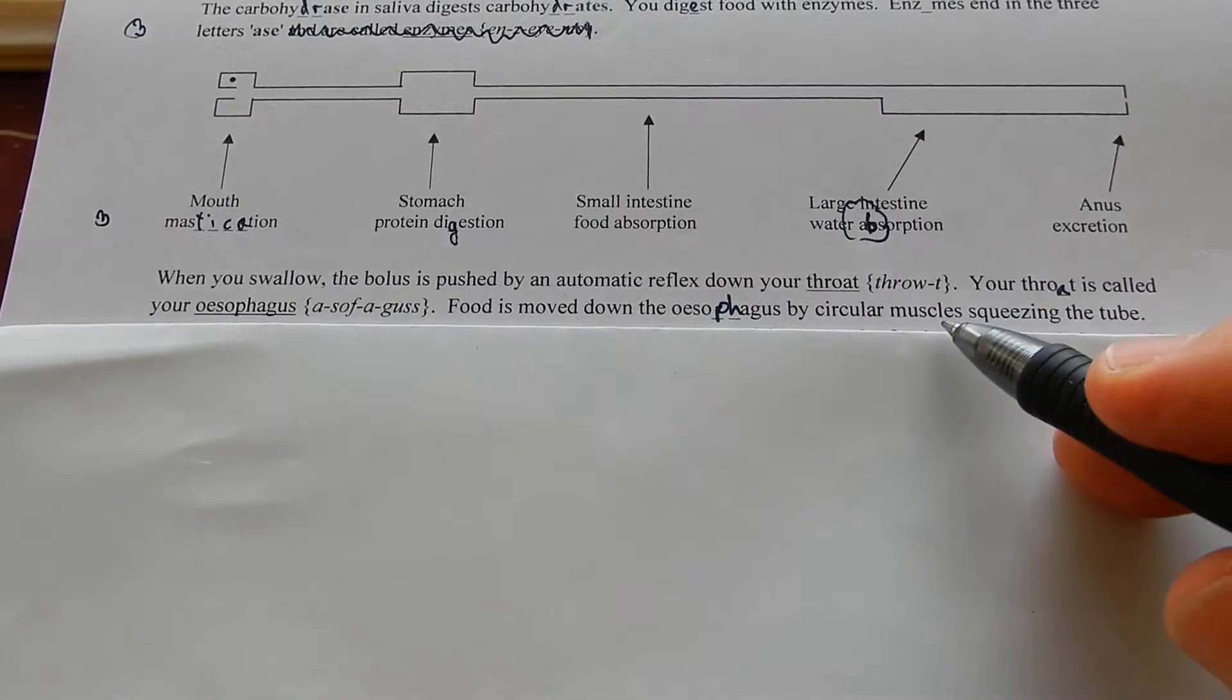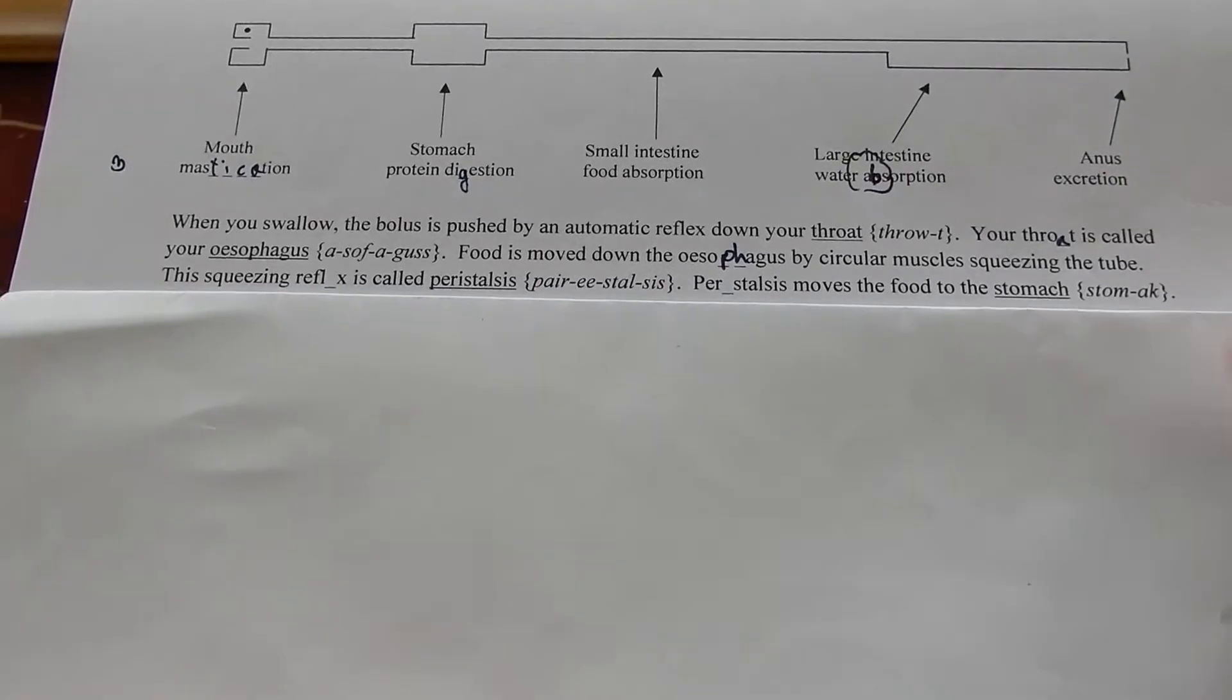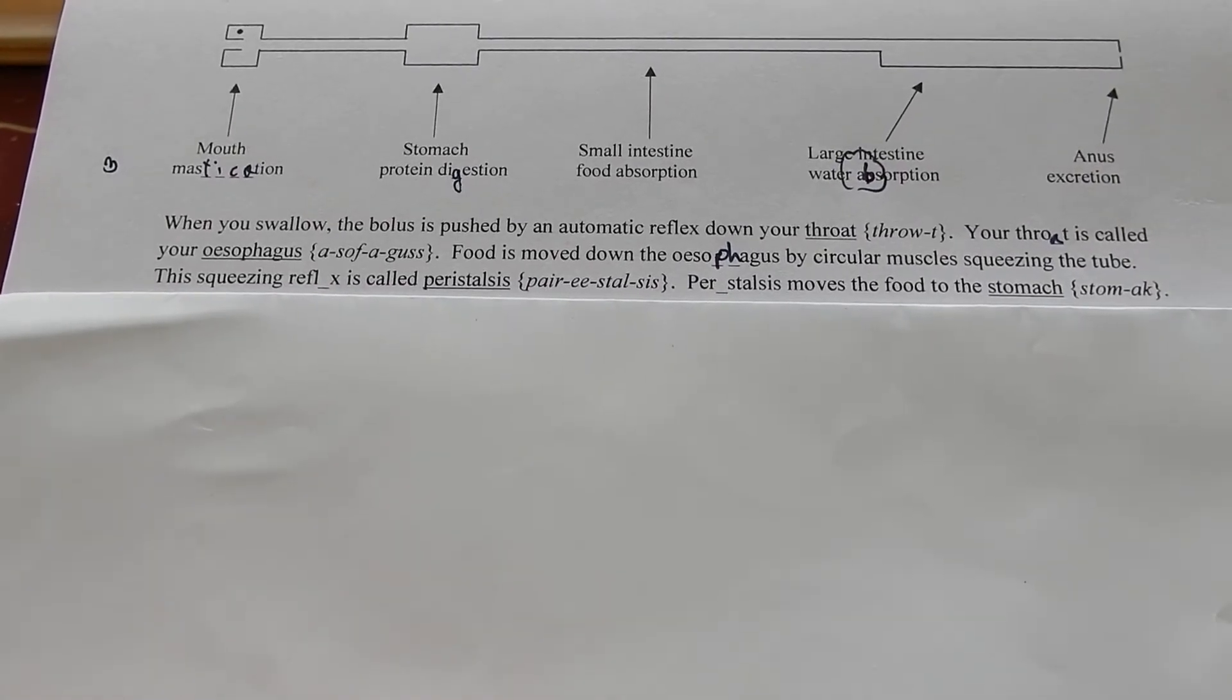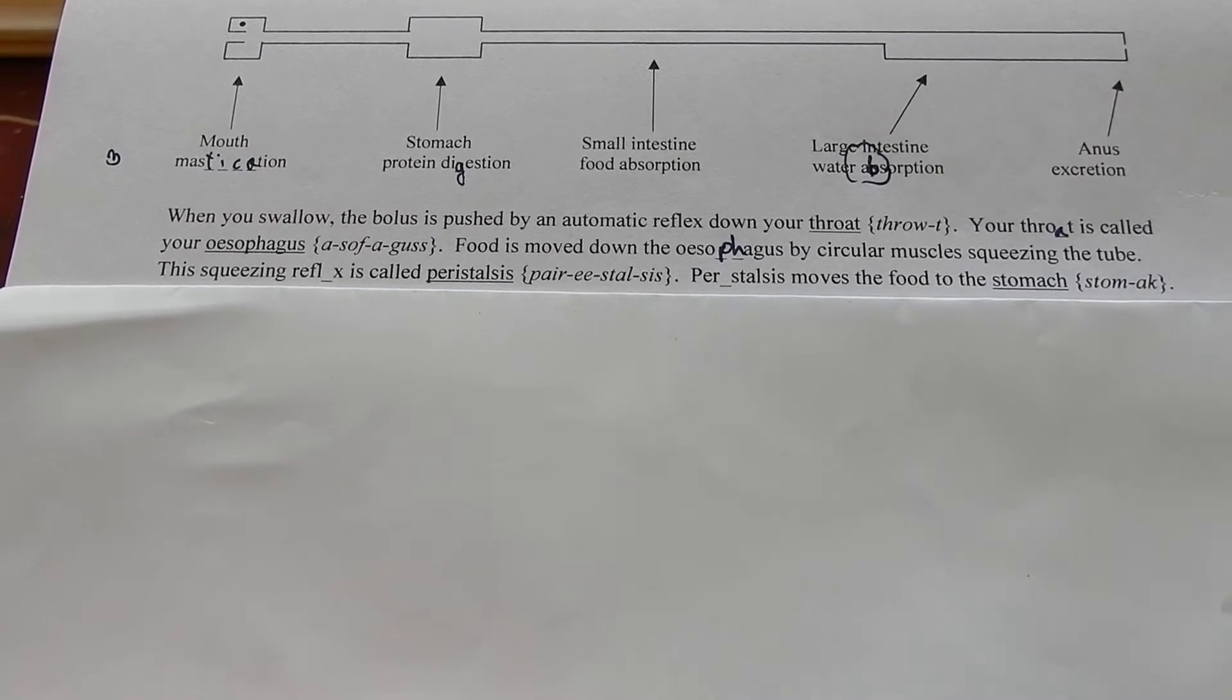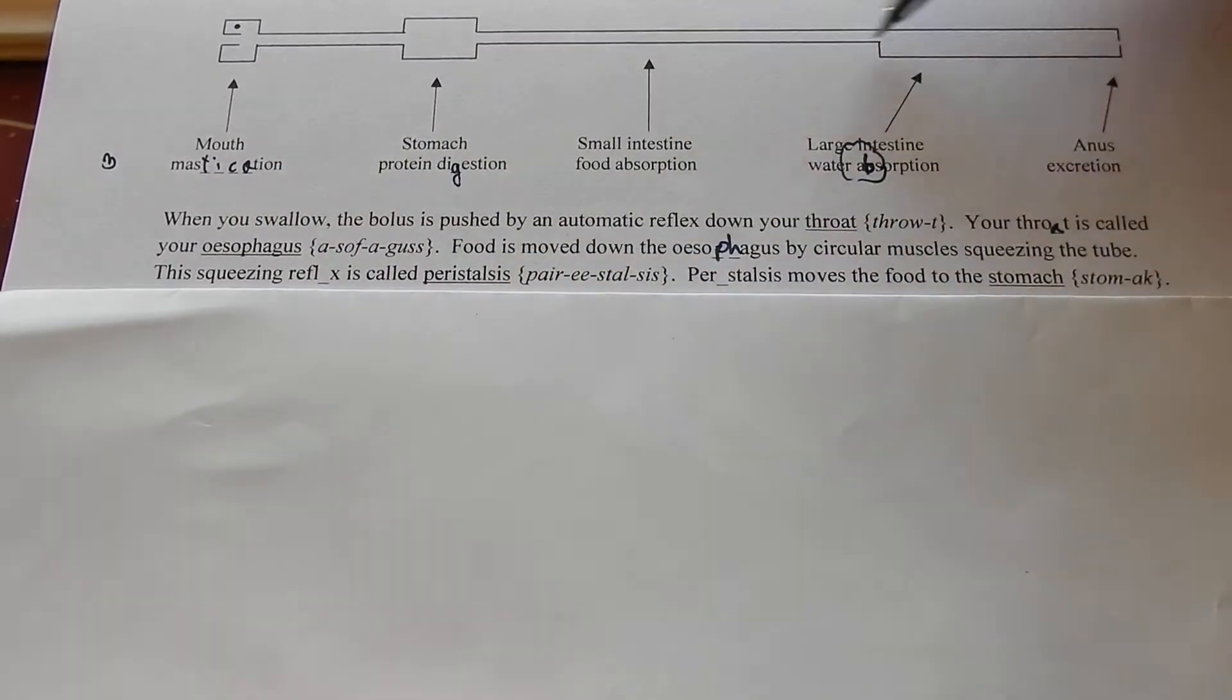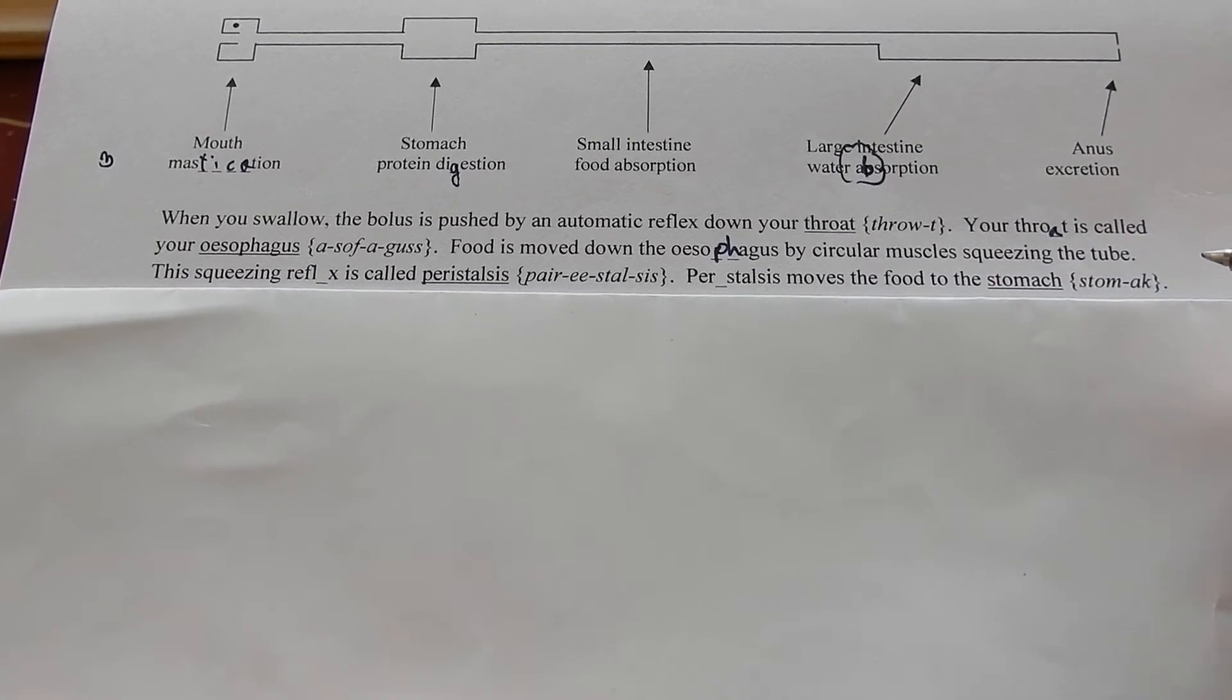By circular muscles squeezing the tube. Just like you squeeze a toothpaste tube to get the toothpaste out. Your circular muscles squeeze your tube to move the food along. This squeezing reflex is called peristalsis.